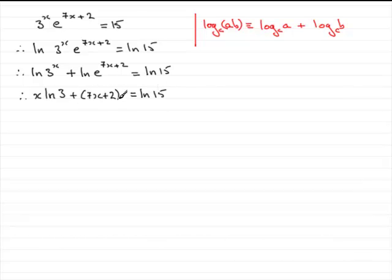I can do away with this bracket if you like. It doesn't have to be there, because we've got a plus out here, so we can remove that. And so what I need to do is subtract 2 from both sides. So therefore, we have x times the natural log of 3 plus 7x is equal to natural log of 15 minus 2.